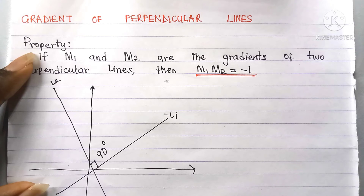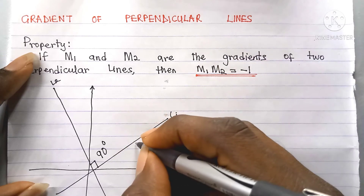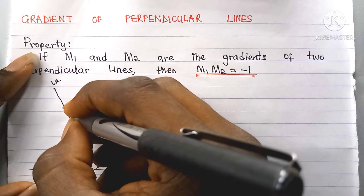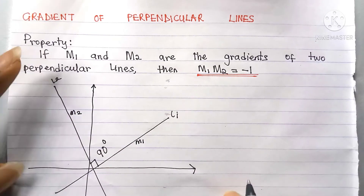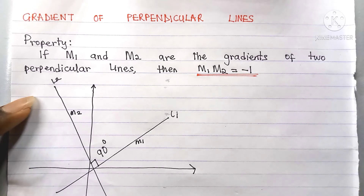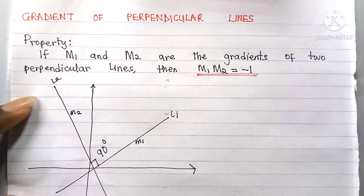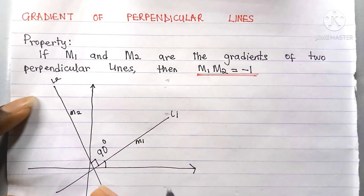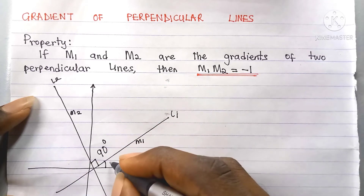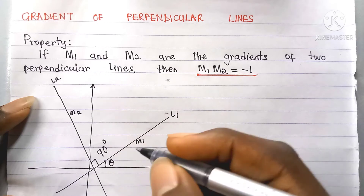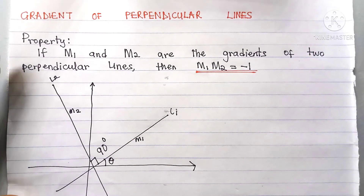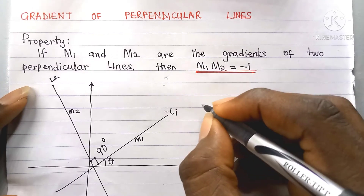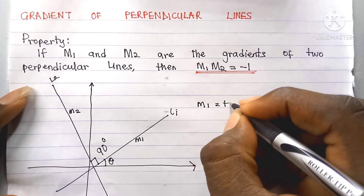Let the gradient of l1 be m1 and the gradient of l2 be m2. I want to show that m1 times m2 is equal to minus one. Let's call the angle that l1 makes with the positive x-axis theta. Since l1 makes an angle of theta with the positive x-axis, m1 is equal to tan theta.